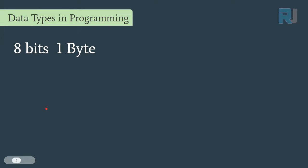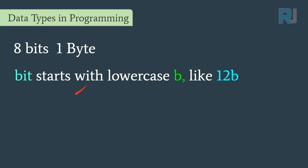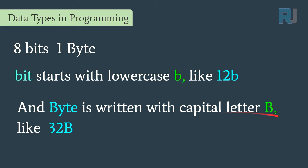Eight bits make one byte — that's the relationship. It's unusual but that's how it is. A bit is usually written with a lowercase 'b', like 12b, while a byte is written with a capital 'B'.